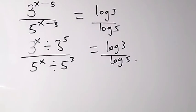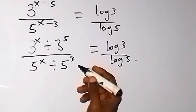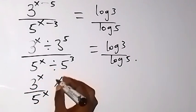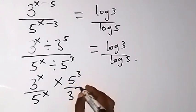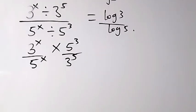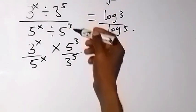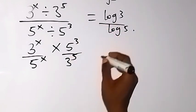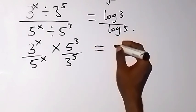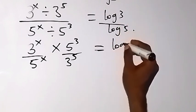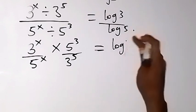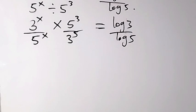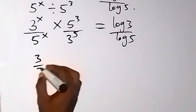From here, we can change this division to multiplication. We have 3 raised to the power x over 5 raised to the power x, multiplied by 5 raised to the power 3 over 3 raised to the power 5. When we change division to multiplication, the fraction switches position. So we can rewrite this as 3 over 5 raised to the power x, since both are raised to the power x. Equals log 3 over log 5.